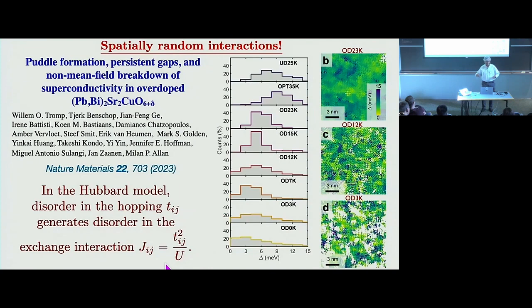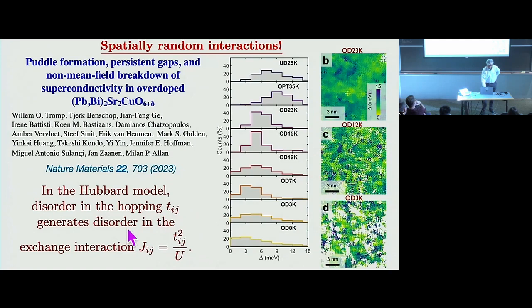Of course if you could solve the problem exactly you could just put disorder in Tij and solve it, but since we're only doing perturbation theory we have to put it in by hand — we're doing some RG and the RG is generating disorder in Jij. [Question from Subir: in the pure Anderson model without interaction, whether you put the disorder in the on-site energy or the hopping makes no difference.] Exactly the same result, yes — but here because of this exchange J it will make a difference.